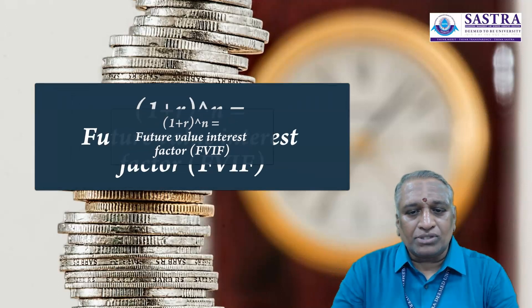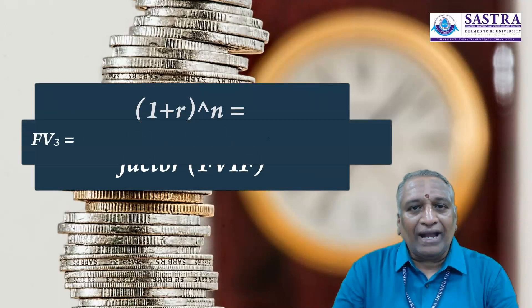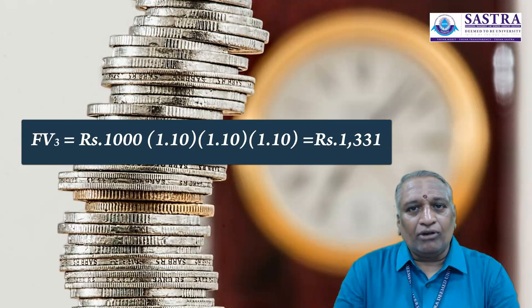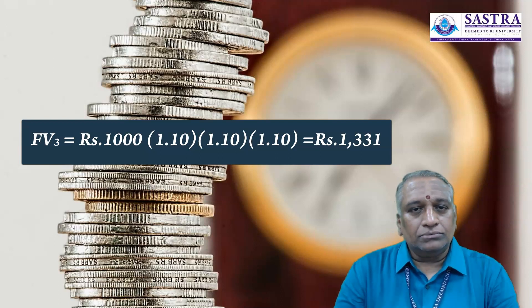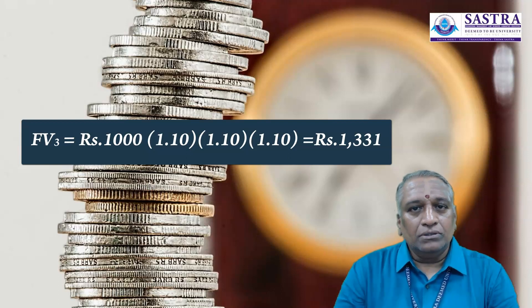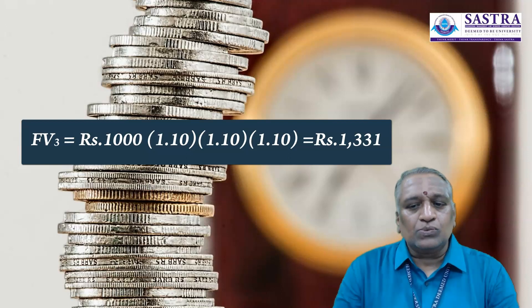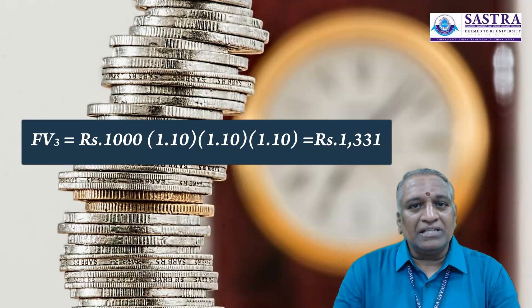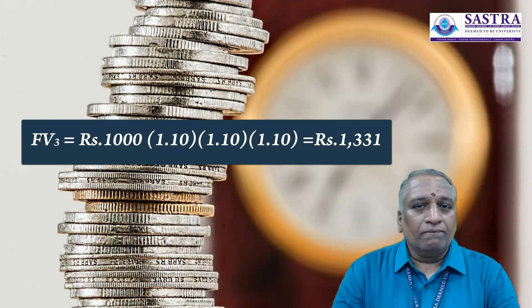To solve future value problems, you have to find the future value factors. You can do it in different ways. In the example given above, you can multiply 1.10 — that is (1 + r), with 1 rupee growing at an interest rate of 10 percent — by itself three times. Or, more generally, (1 + r) by itself n times. This becomes tedious when the period of investment is long. Suppose for 10 years — just imagine the difficulty you may face when you have to compute 1.1 raised to the power 10.